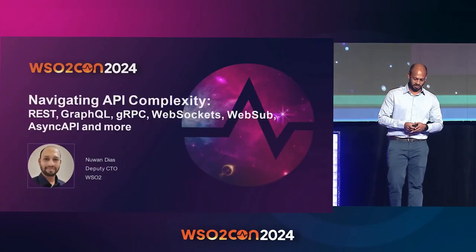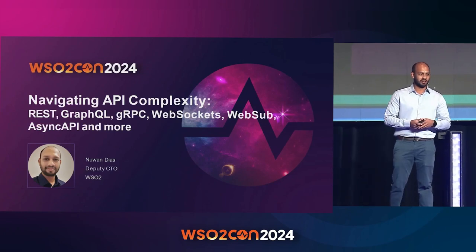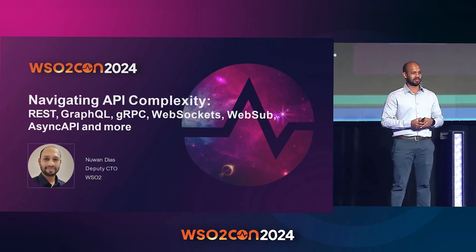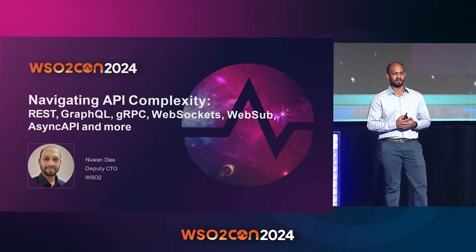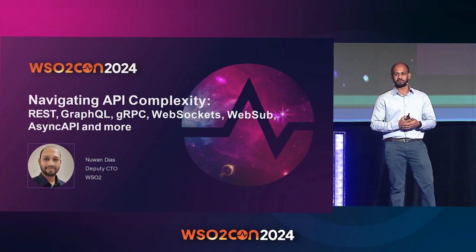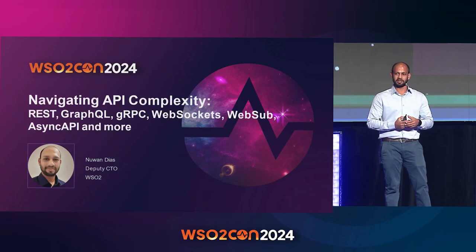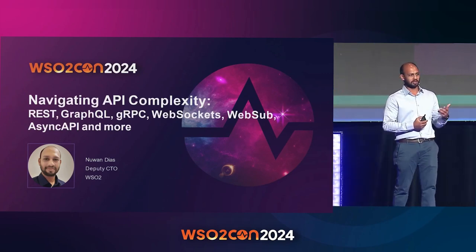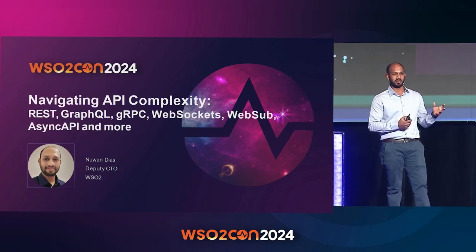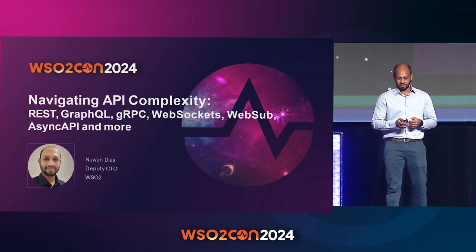Thanks, Shankar, for that intro. My name is Noan, and I work as a deputy CTO for the API and integration space. Glad to be here after a long time. I'll be talking about the different kinds of APIs — what to use, when to use, how to secure, how to rate limit, and so on. We'll start with an introduction into each API type, pros and cons, their specifications, and then do a deep dive into security and rate limiting.